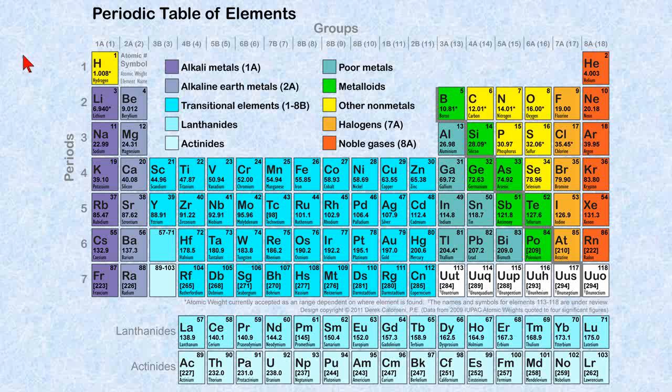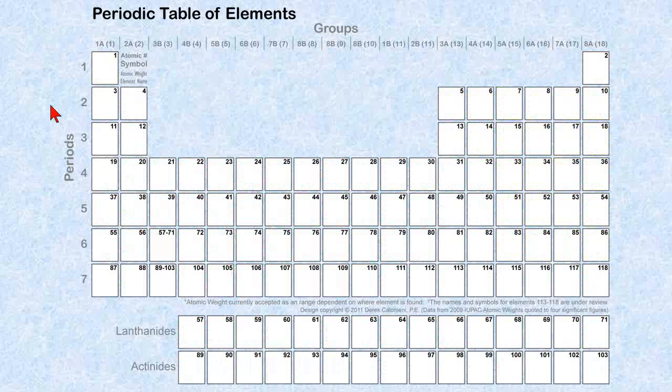So here's the periodic table of elements, a nice color table, and we'll explain how we arrive at all of this information. First, we'll break the table down into black and white, and you'll note that the elements are numbered from 1 to 118.